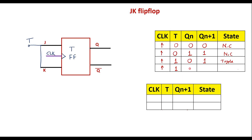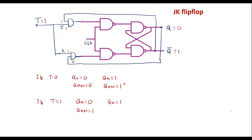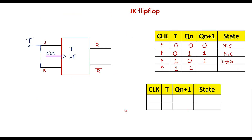Now if T is 1 and Qn is 1 — with Qn equal to 1, Q bar will be 0. So J gets 1 and K gets 0 through the AND gates... both J and K become 1 again — it will toggle. Therefore, Qn+1 will be the complement of Qn, which is 0. That is nothing but toggle.